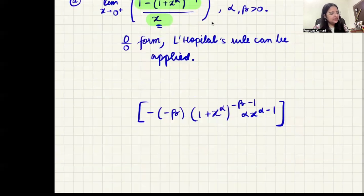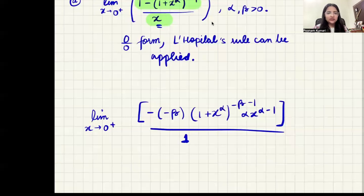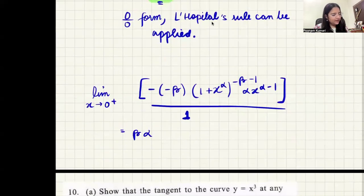We actually have to find the limit of this divided by one, as x is tending to zero positive. That should give you the same result. If we simplify this a bit, minus minus becomes plus, so we get beta alpha, and here we have x raised to the power alpha minus one, and then one plus x raised to the power alpha, and then here minus beta minus one.